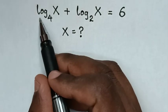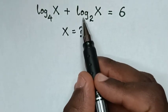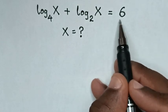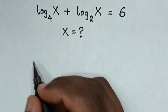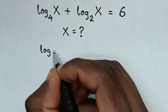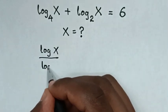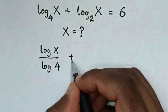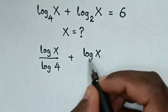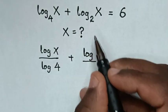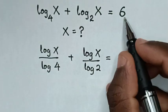Hello! How to solve log of x base 4 plus log of x base 2 is equal to 6, to find the value of x. So from here, this is the same as log of x over log of 4, then plus, which is the same as log of x over log of 2, then is equal to 6.